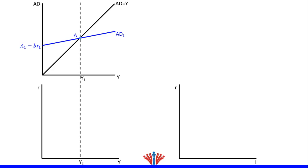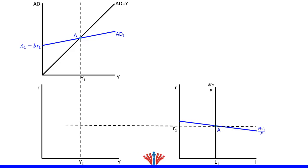In the money market, we will draw the real money supply as a vertical line and the downward money demand. The point of intersection is the equilibrium, which we will label as A. We will draw a horizontal dotted line to reflect the equilibrium real interest rate in the money market and IS-LM model.